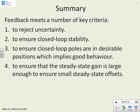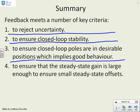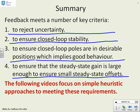In summary, when you design feedback there are a large number of criteria you're trying to meet. Number one, you're trying to reject uncertainty. You want to ensure closed loop stability — obviously if you're unstable the loop is no good to you. But you don't only want stability; you also want to ensure that the closed loop poles are in desirable positions so you get good behaviour. And you want to ensure that the steady state gain is large enough so the steady state offset is small enough. The following videos are going to focus on some simple heuristic approaches to meeting these four requirements.